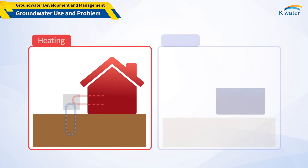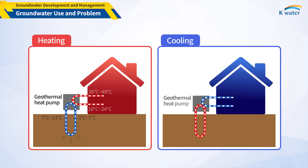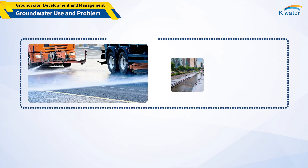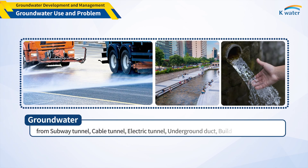Korea is also actively running groundwater energy projects to use groundwater for heating and cooling. The average temperature of groundwater is constant at 12 to 15 degrees Celsius throughout the year, so it can be used for cooling in summer and heating in winter. Meanwhile, groundwater from subways, cable tunnels, and underground spaces of buildings is being used for river maintenance flow, leisure facilities, and road cleaning.